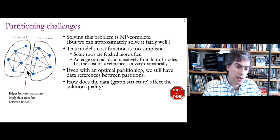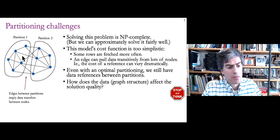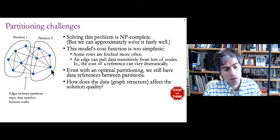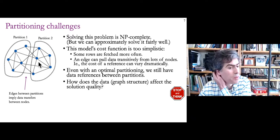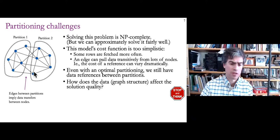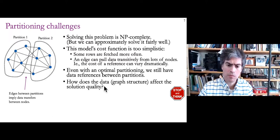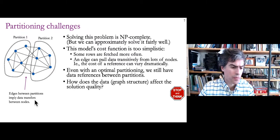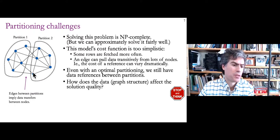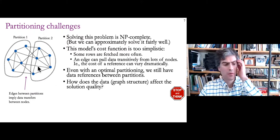This cost function is a bit simplistic, though, because we're giving every edge the same weight. Some references are more important than others — some nodes and references will be fetched more frequently. The partitioning problem should reflect that, so you could weight nodes or edges, which makes it more complicated. In general, we're always going to have some crossings, and those crossings represent the need to transfer data between partitions or fetch from more than one partition.